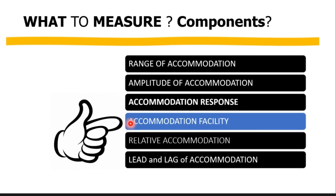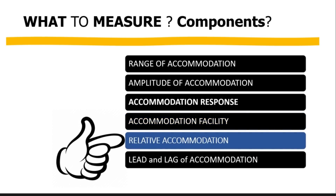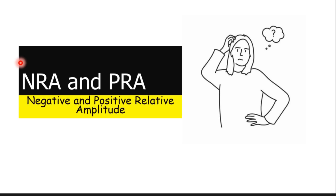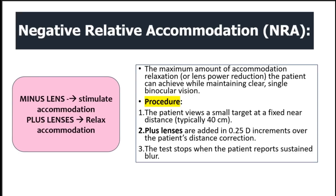In our previous video, we talked about the accommodative facility, and today we are going to be talking about the relative amplitudes — the negative relative amplitude abbreviated as NRA, or the positive relative amplitude abbreviated as PRA. Unlike accommodative facility, where we measure the flexibility and speed with which the patient can alter accommodative demand, here we are measuring how well a patient can relax or stimulate accommodation while maintaining a clear single binocular vision.